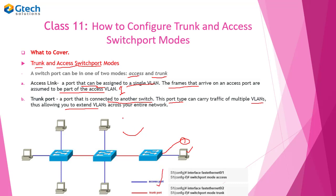A trunk port is a port connecting two switches. This is a trunk port — a port connecting two switches between them is called a trunk port. The ports connecting switches are trunk ports, while the ports with the blue lines connecting to computers are access ports. A trunk port connects two switches; an access port connects your end devices.